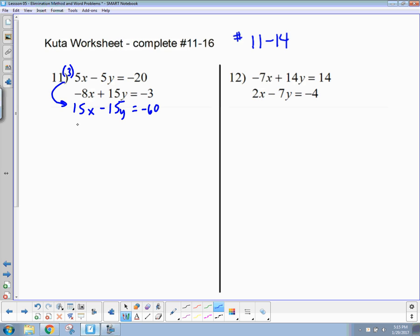Okay. Well, add like terms. Add them up. Those cancel. 15 minus 8 is going to be 7x. That'll be negative 63. Divide by 7. x equals negative 9.